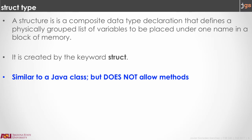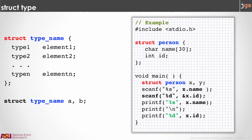Struct allows us to create a type that is a collection of variables. This is like a class in Java, but without methods. We use the keyword struct, followed by the name that we want to use for the struct. For instance, if we want to create a record for a person, we can create a struct person. Then, inside curly brackets — like you did with classes in Java — you are going to put a list of variables that are going to be part of this struct. You put the type and the name of the variable. For instance, for the person, if you want to store the name, you can use an array of char. And we can add an integer variable id. Note that the struct is created outside of the methods.